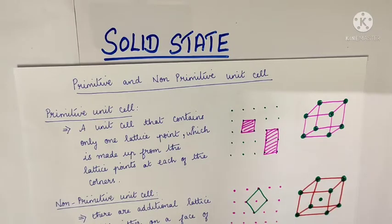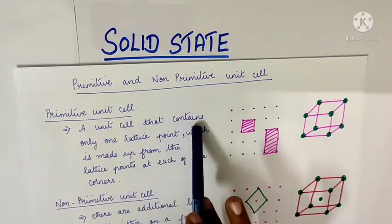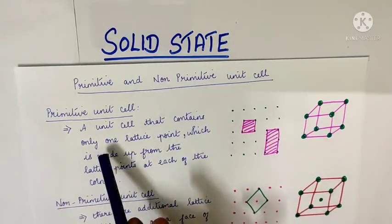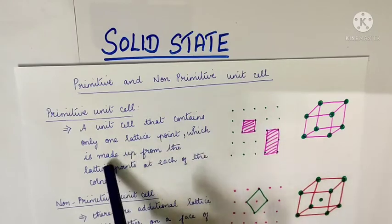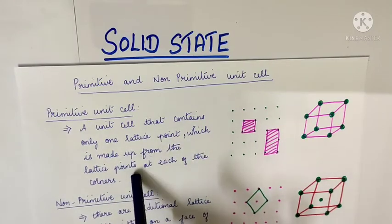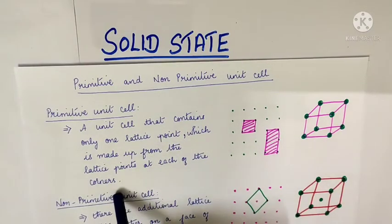A unit cell is of two types. One is primitive and the other one is non-primitive. A primitive unit cell is a unit cell that contains only one lattice point, which is made up from the lattice points at each of the corners.